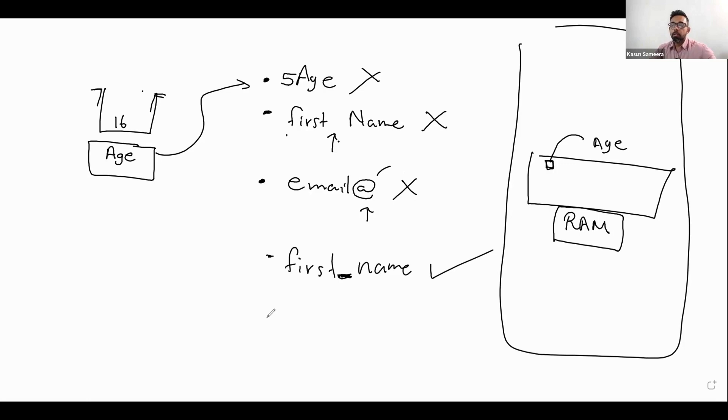There's another rule: if you want to use a number, you can't use it at the beginning, but you can use it in the middle or at the end. That means age5, you can use the number here, or in the middle - it is okay.